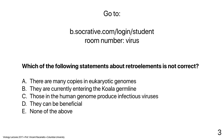Our last question: which of the following statements about retro-elements is not correct? A: there are many copies in eukaryotic genomes. B: they are currently entering the koala germline. C: those in the human genome produce infectious viruses. D: they can be beneficial. E: none of the above. The incorrect statement is C — those in the human genome do not produce infectious viruses; they are all replication-defective. The koala endogenization is indeed occurring in real time, and they can be beneficial — the placenta would not exist without a retrovirus.